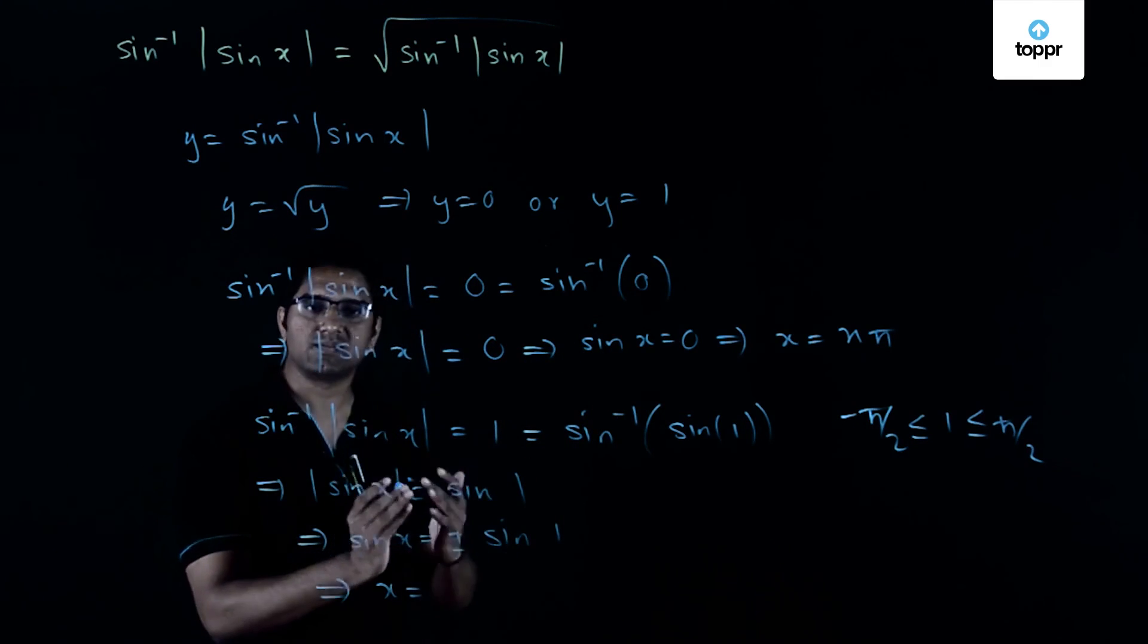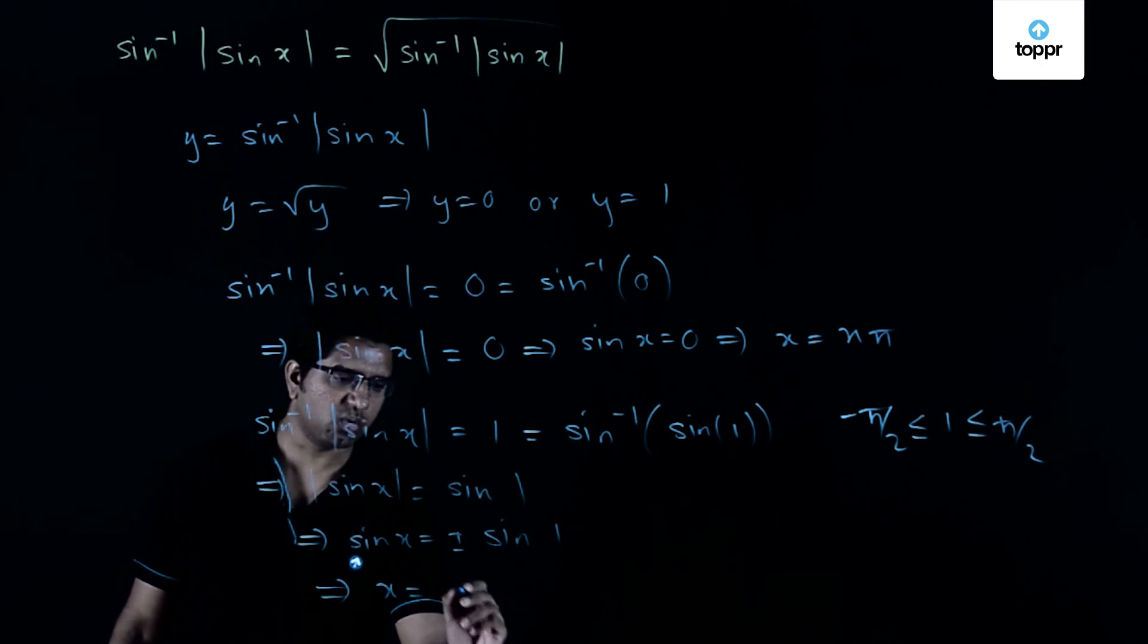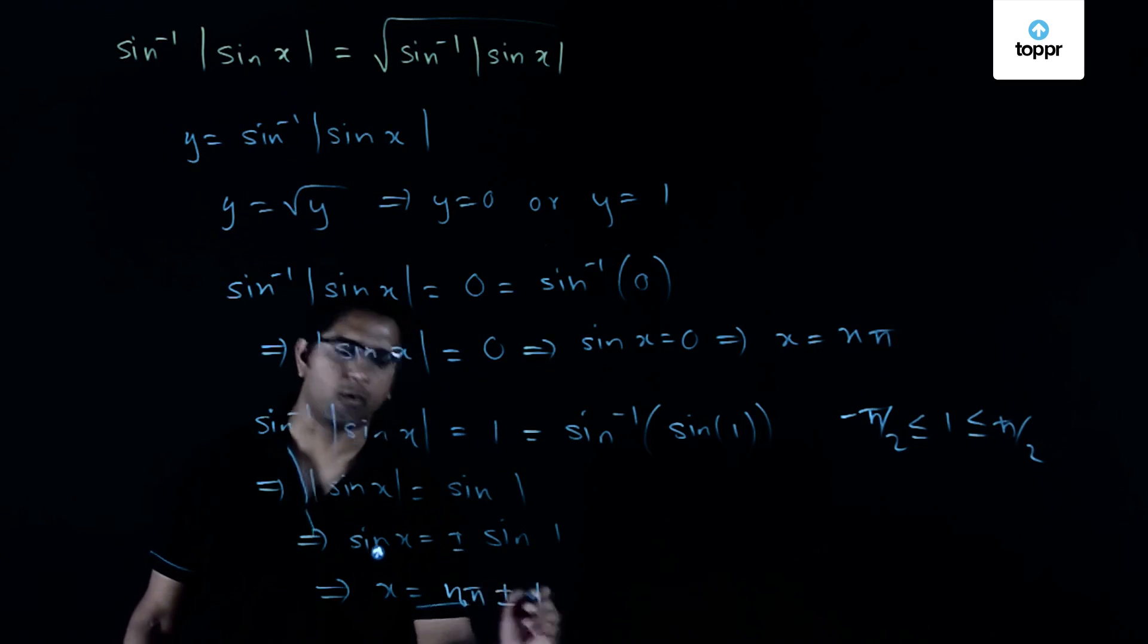But since there is both plus and minus involved here, if you reduce it ultimately what you will get is x is equal to n pi plus or minus 1.